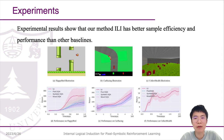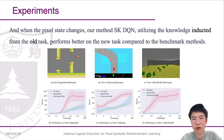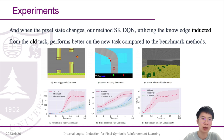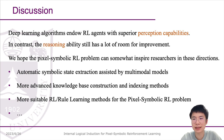Experimental results show that our methods have better sample efficiencies and performance. And when the pixel state changes, the knowledge inducted from the old task is easy to transfer. We know that deep learning endows agents with superior perception, but the reasoning abilities still have much room to improve.